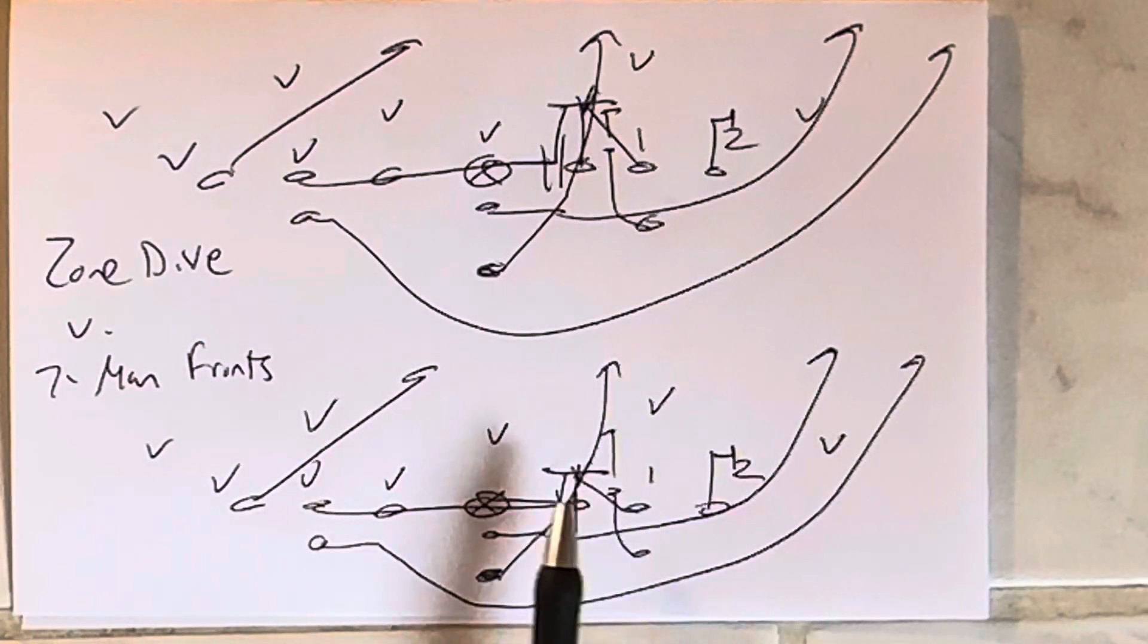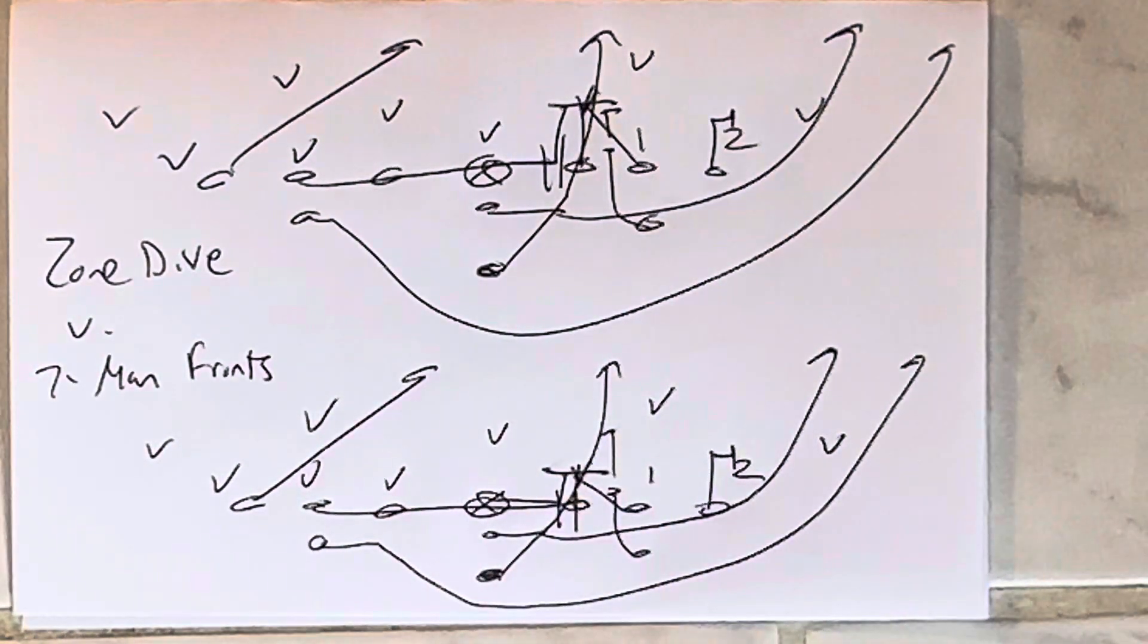So this guy's either got to come down to take the dive or come up the field and play the quarterback, because remember, he's got to defend mid-triple too. So if you can't get four-plus yards on zone dive against a seven-man front, you're going to lose.